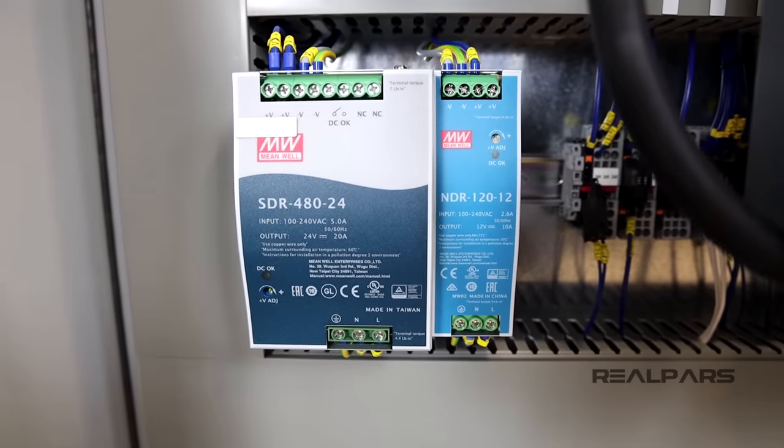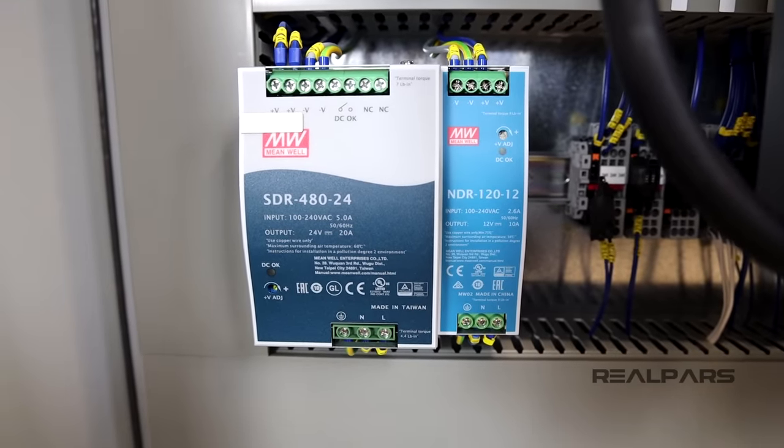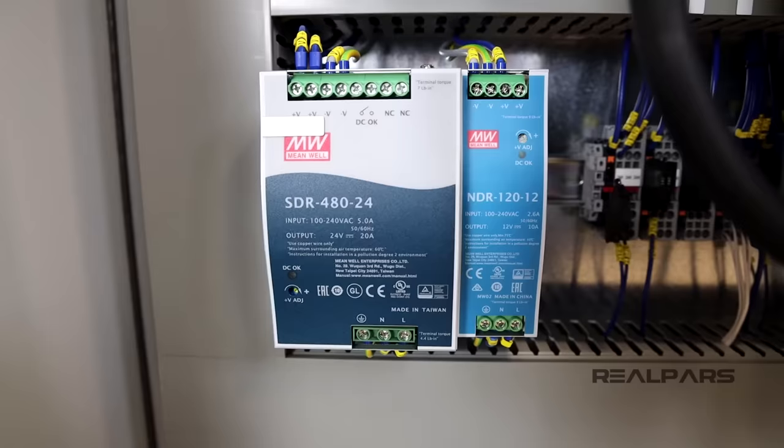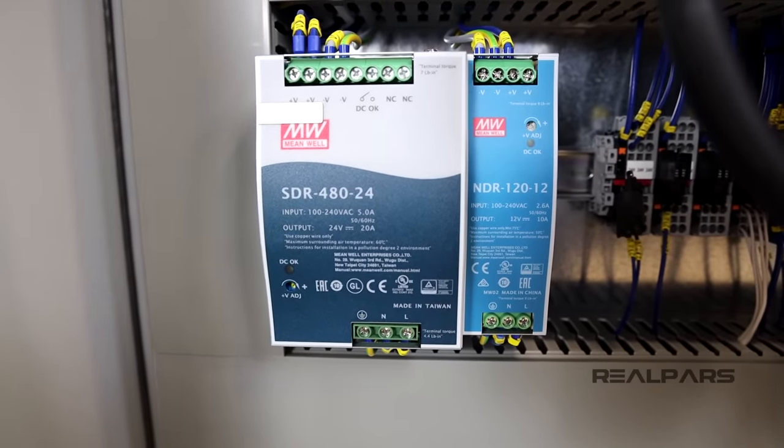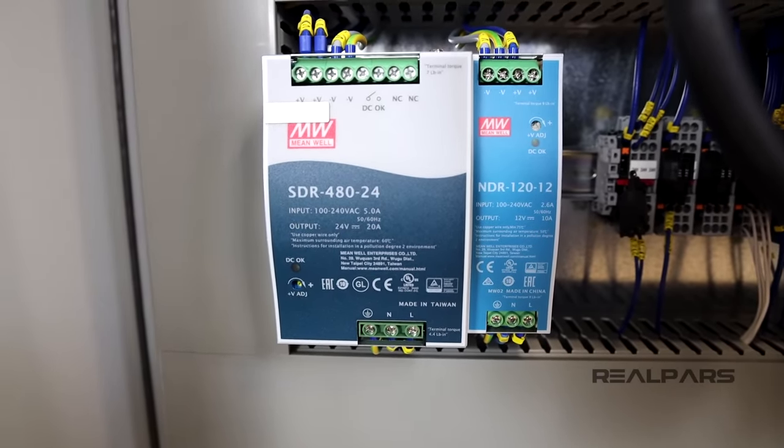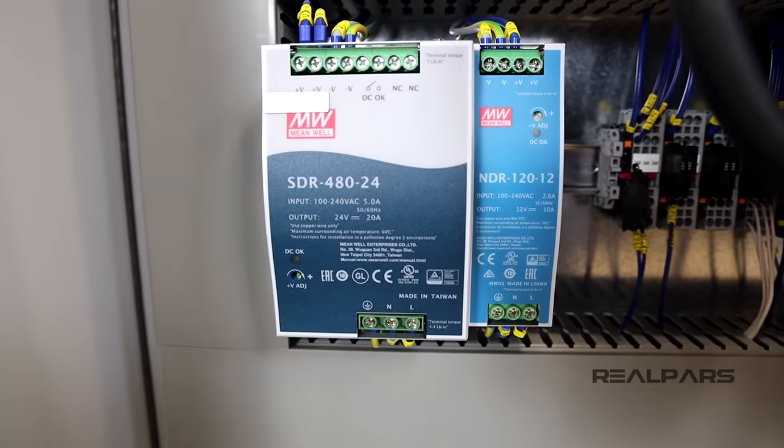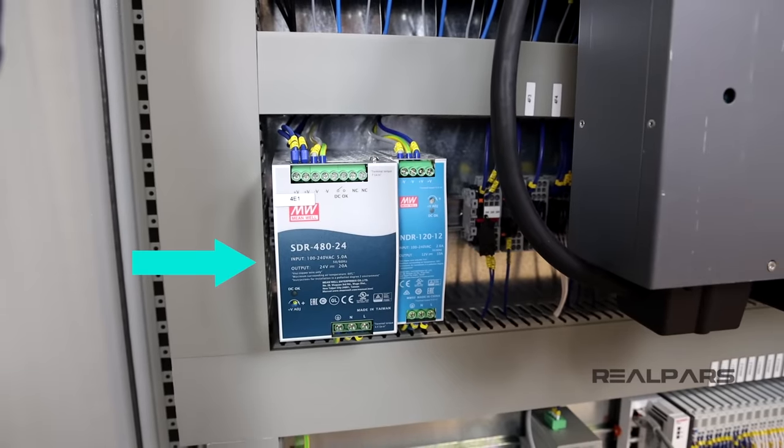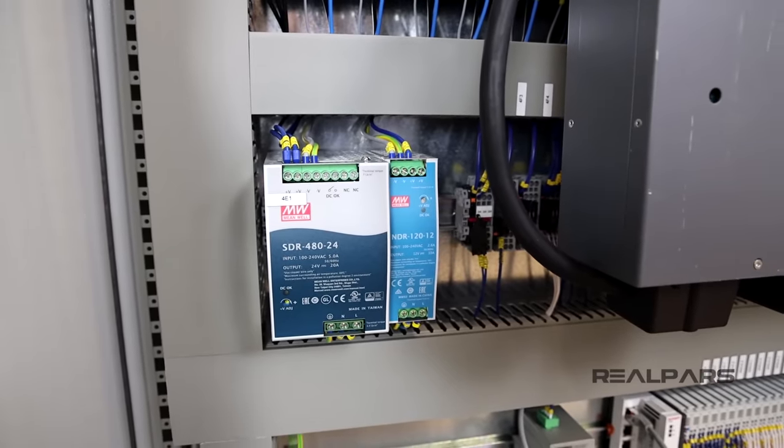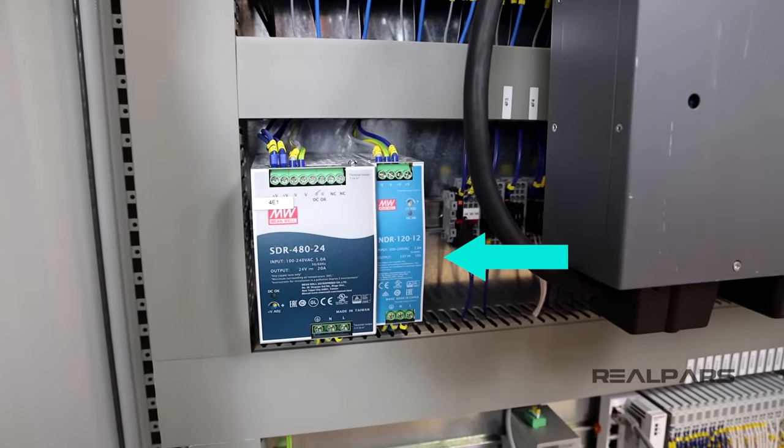Now, you may ask, why we have two power supplies in this control panel with different output voltage? Well, that's simply because we have some devices in the control panel that work with 24V DC, and some other devices that work with 12V DC. We use this one to power the devices that work with 24V DC, and this one for powering the devices that work with 12V DC.